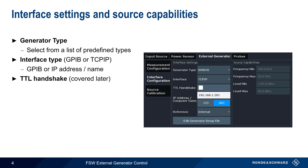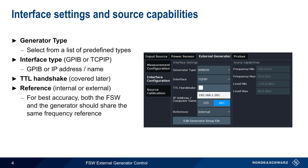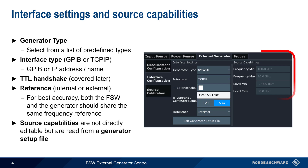TTL handshake is a topic we'll come back to in a few minutes. The type of frequency reference can also be configured. Internal uses the FSW's own internal frequency reference, but for best accuracy, the FSW and the generator should share the same frequency reference. Note that source capabilities of the selected generator are shown but are grayed out, because these parameters are not directly editable, but rather are read from a generator setup file.